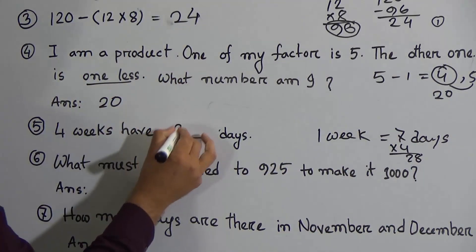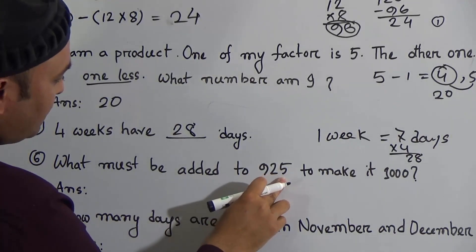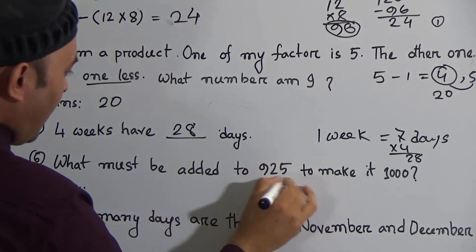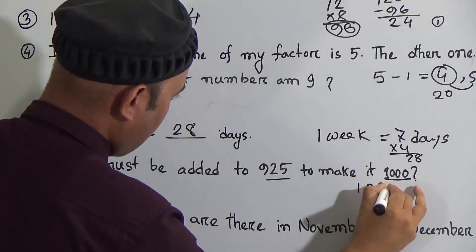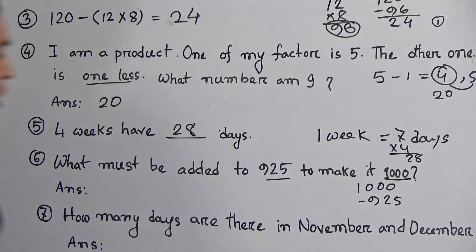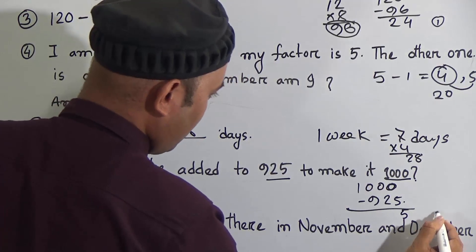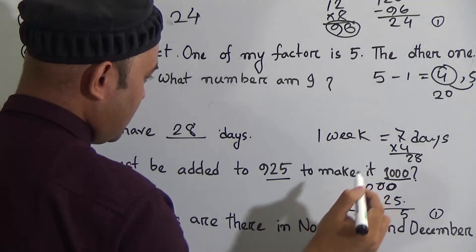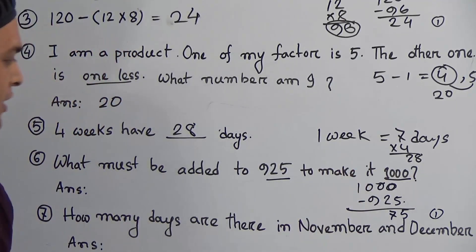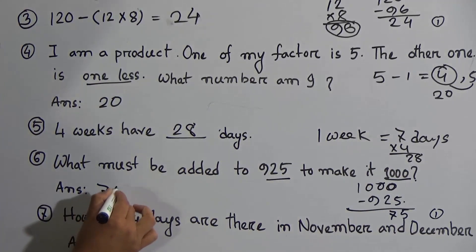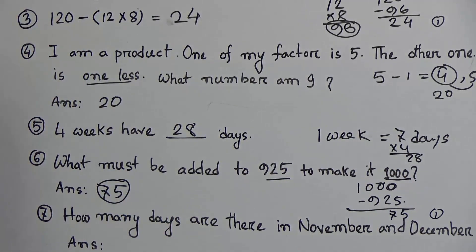Number six: what must be added to 925 to make it 1,000? We understand this is a subtraction problem — we have to subtract 925 from 1,000. 5 from 0: borrow, 5 from 10 is 5, carry 1; 1 and 2 is 3, 3 from 0 means borrow, 3 from 10 is 7, carry 1; 9 and 1 is 10, 10 from 10 is 0. The answer is 75.